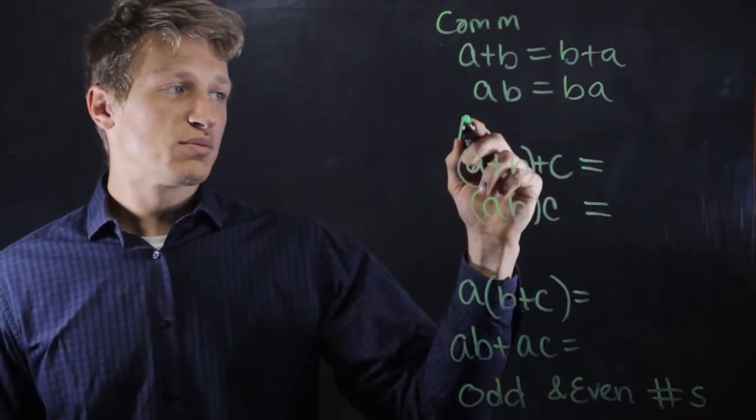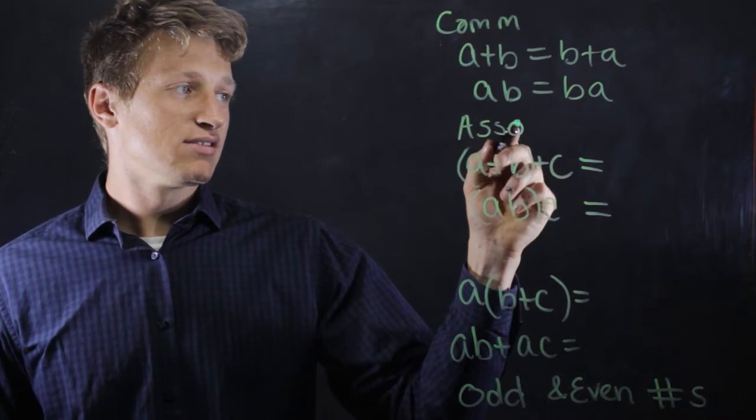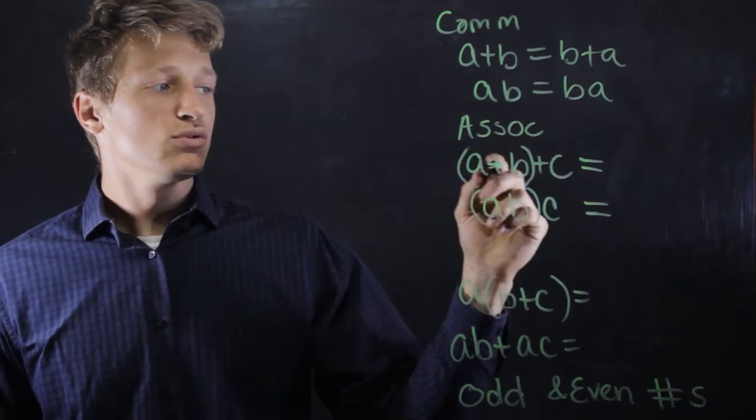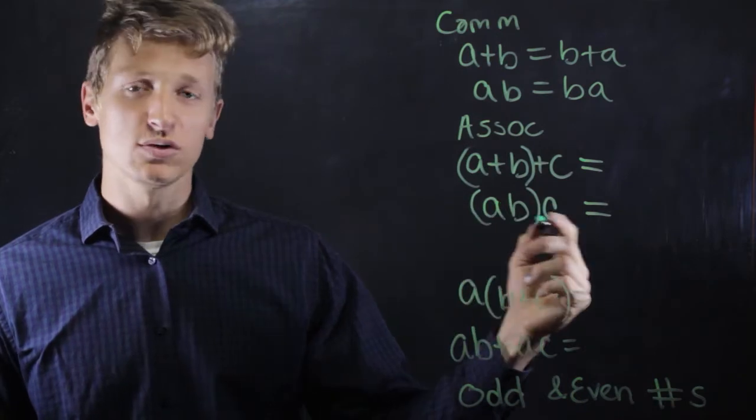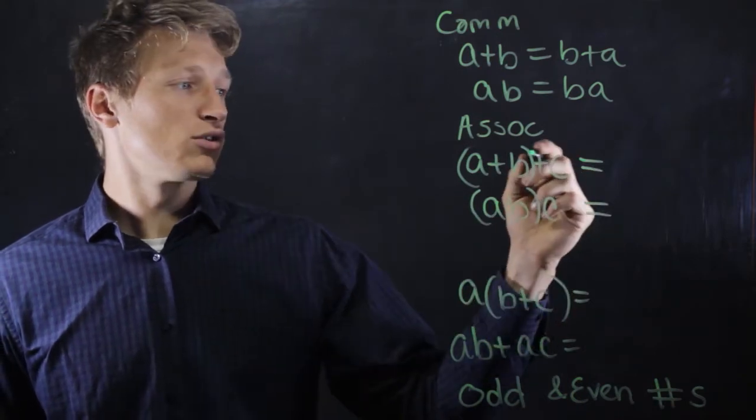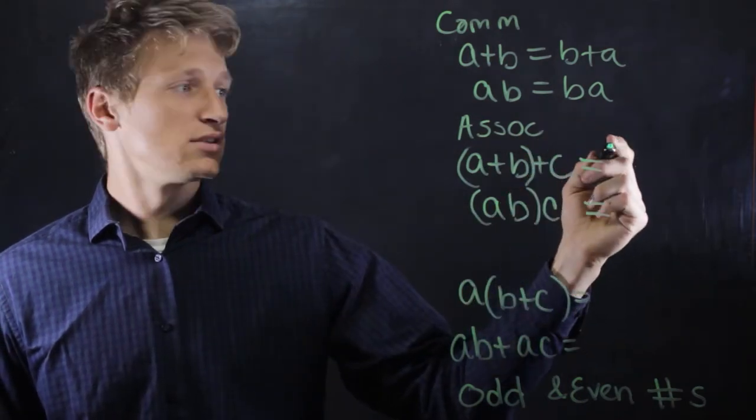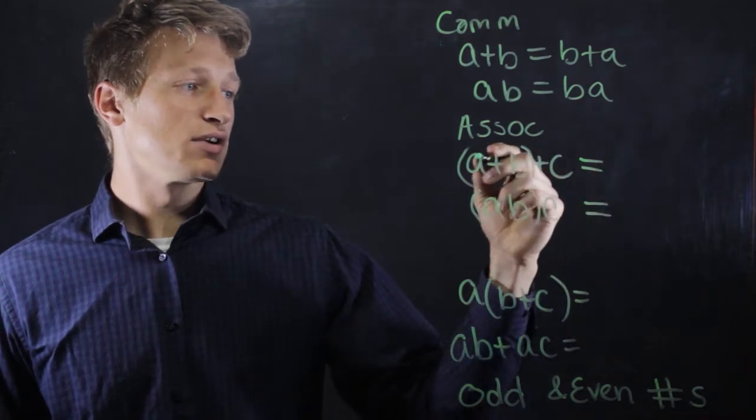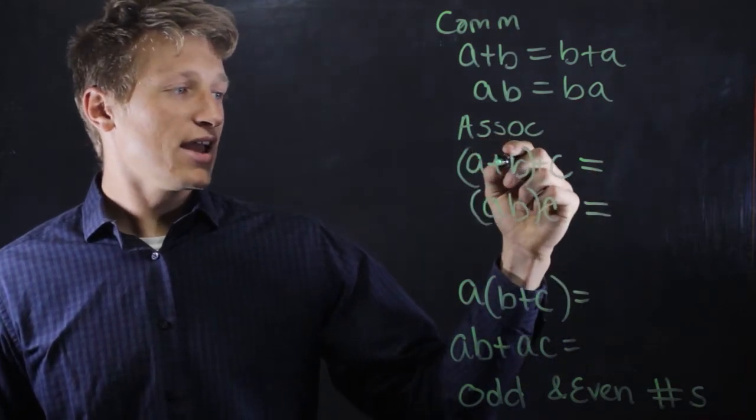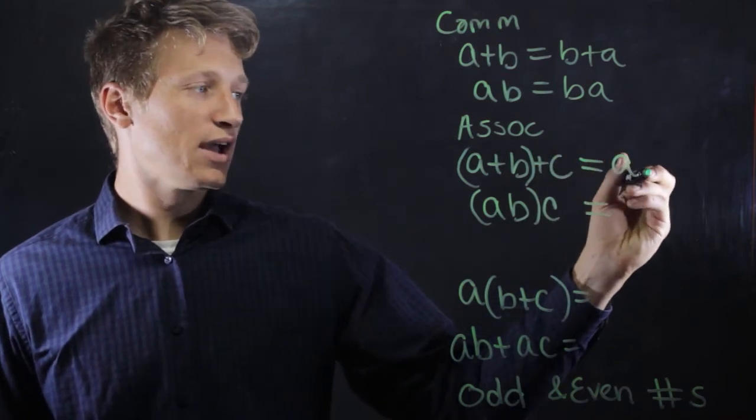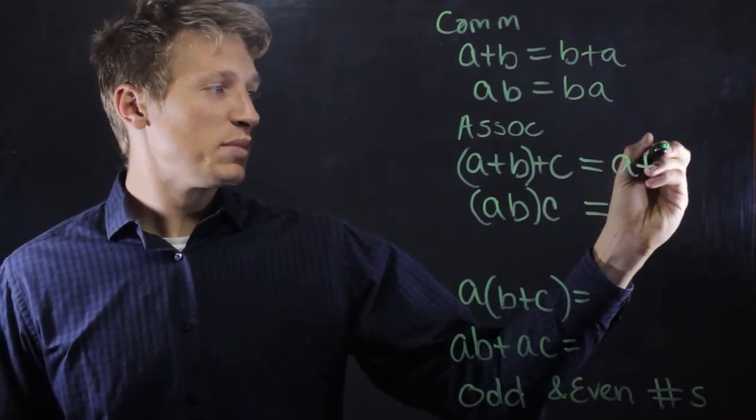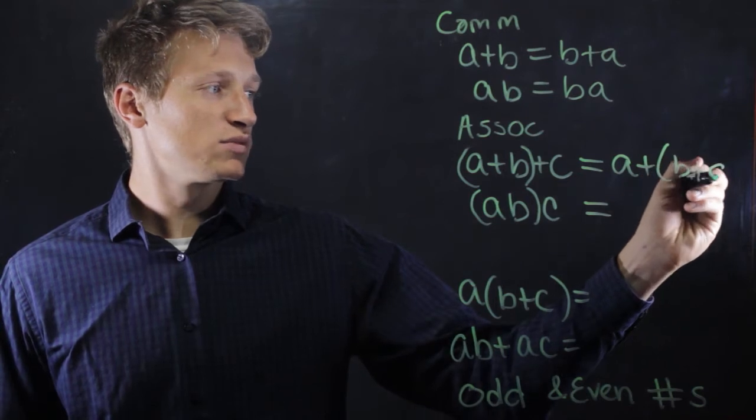The associative property says that if we group two numbers or more in an addition problem or in a multiplication problem, we can group two other numbers and get the same result. So for example, if we add a to b in a group and add it to c, we'll get the same result if we add a to b plus c. We just move the grouping.